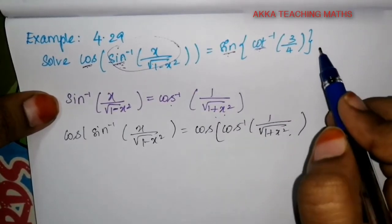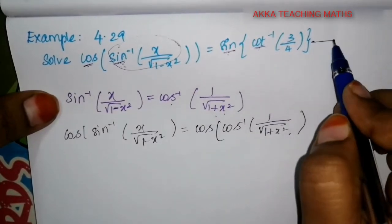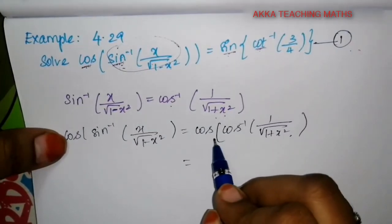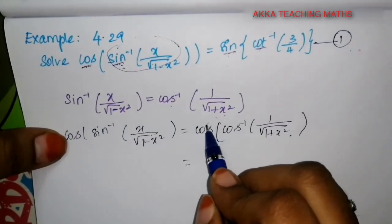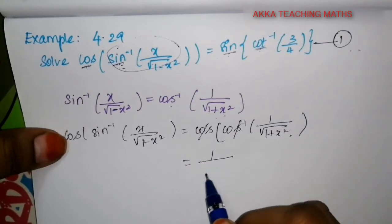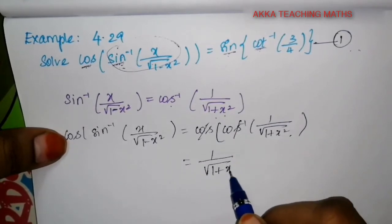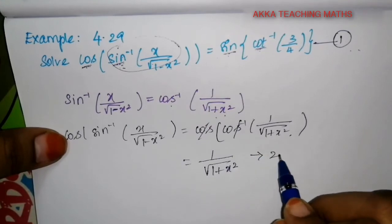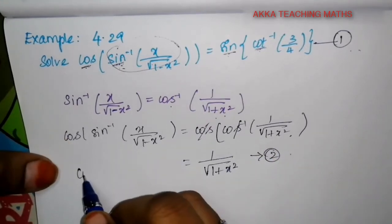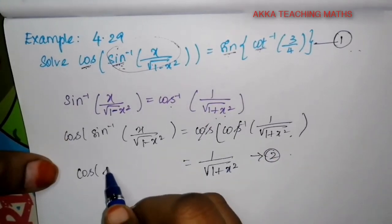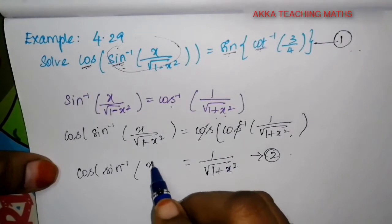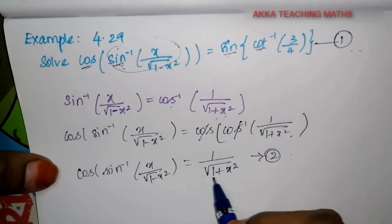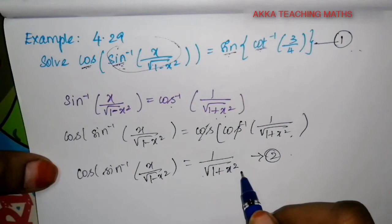So this gives us equation 1: cos inverse of 1 divided by root of 1 plus x square. This is equation 2. So cos of sin inverse of x divided by root of 1 minus x square equals 1 by root of 1 plus x square.